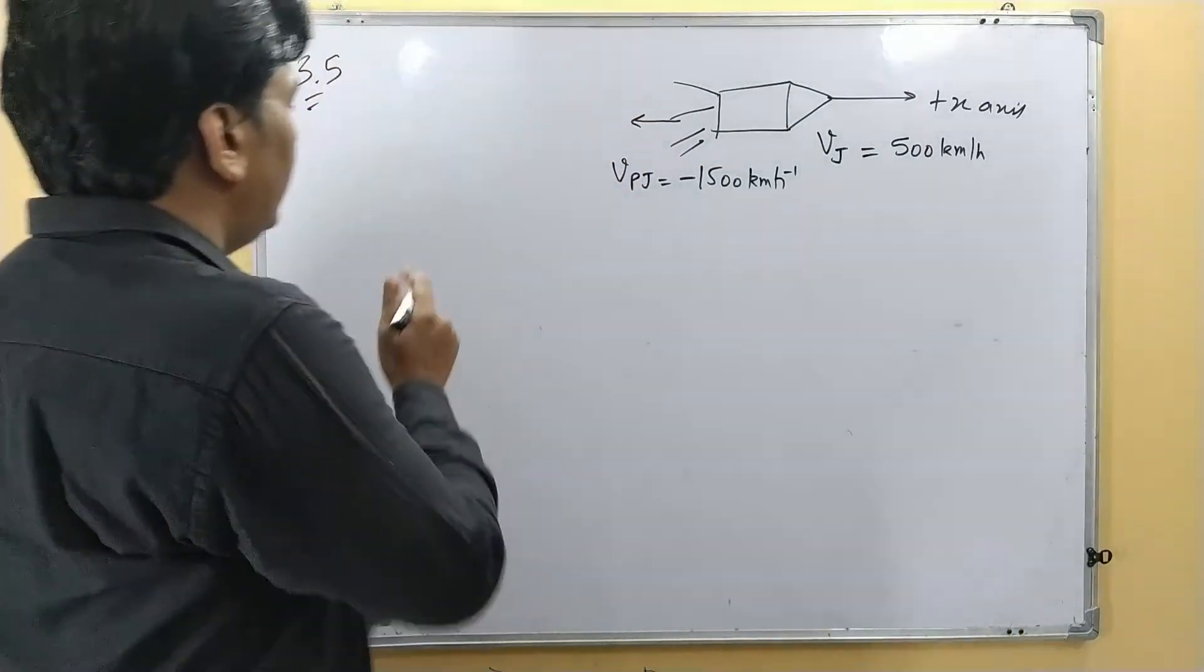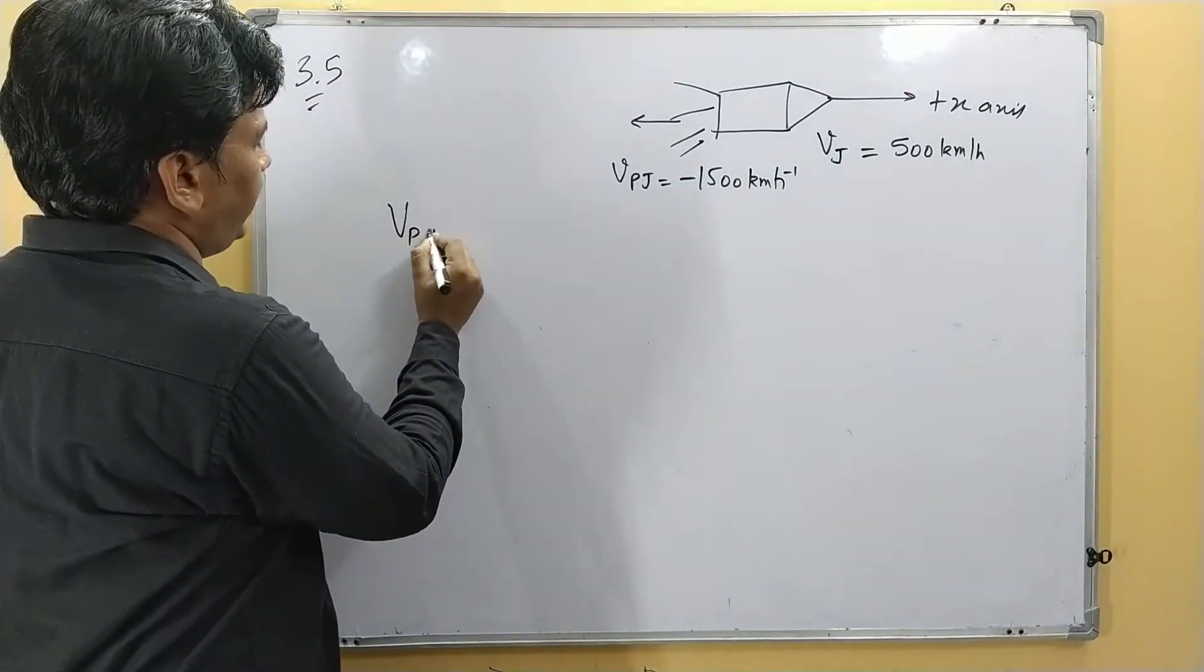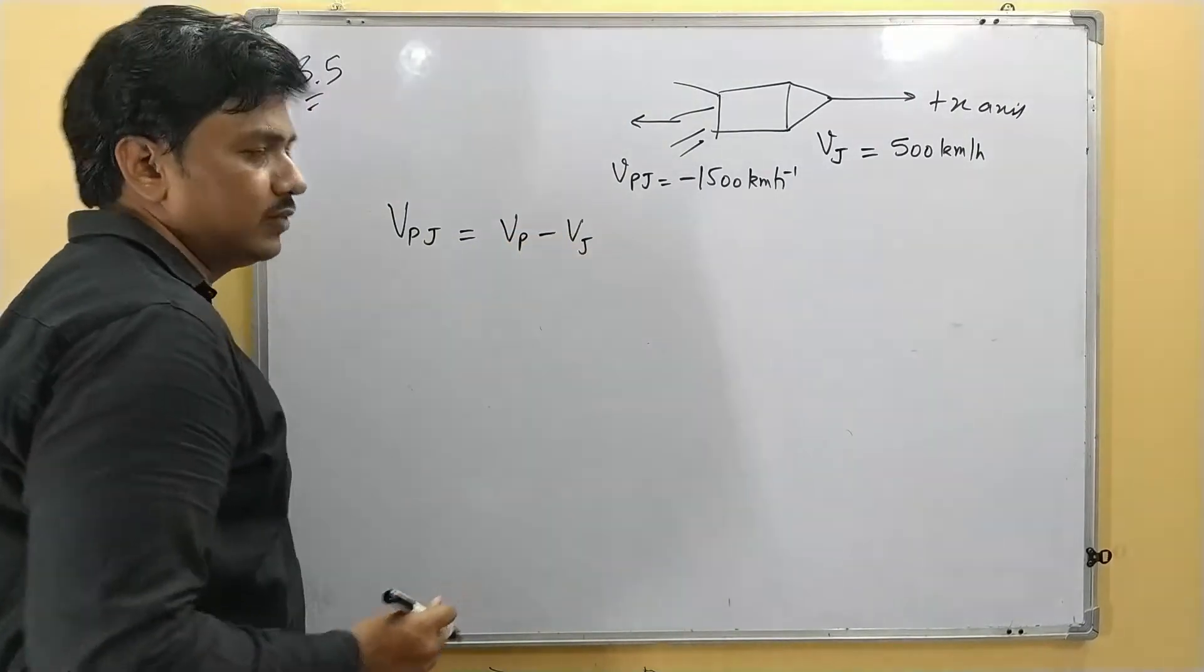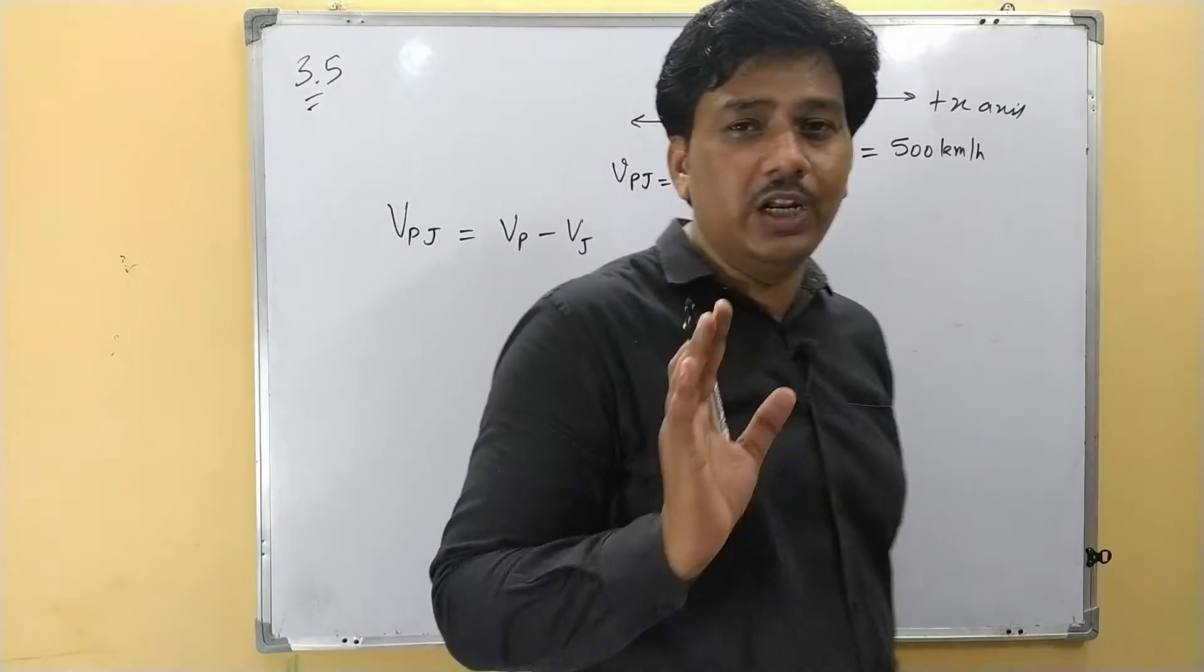Now velocity of the product with respect to jet plane is vp minus vj. We can write it as this is the formula for relative velocity.